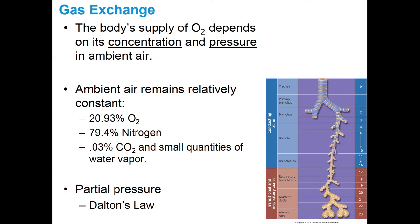Since the concentration of oxygen stays relatively consistent, one of the things that does change is the pressure of that oxygen. Atmospheric pressure — also called barometric pressure — is the weight of the atmosphere pushing down on you. The pressure of air at sea level is 760 millimeters of mercury, which equals 14.7 pounds per square inch.